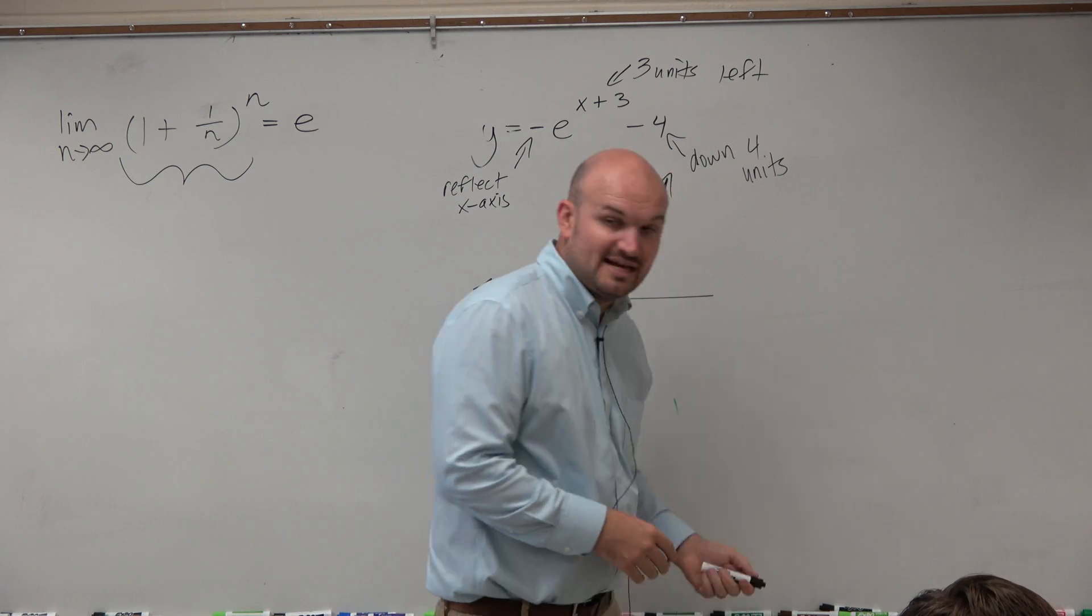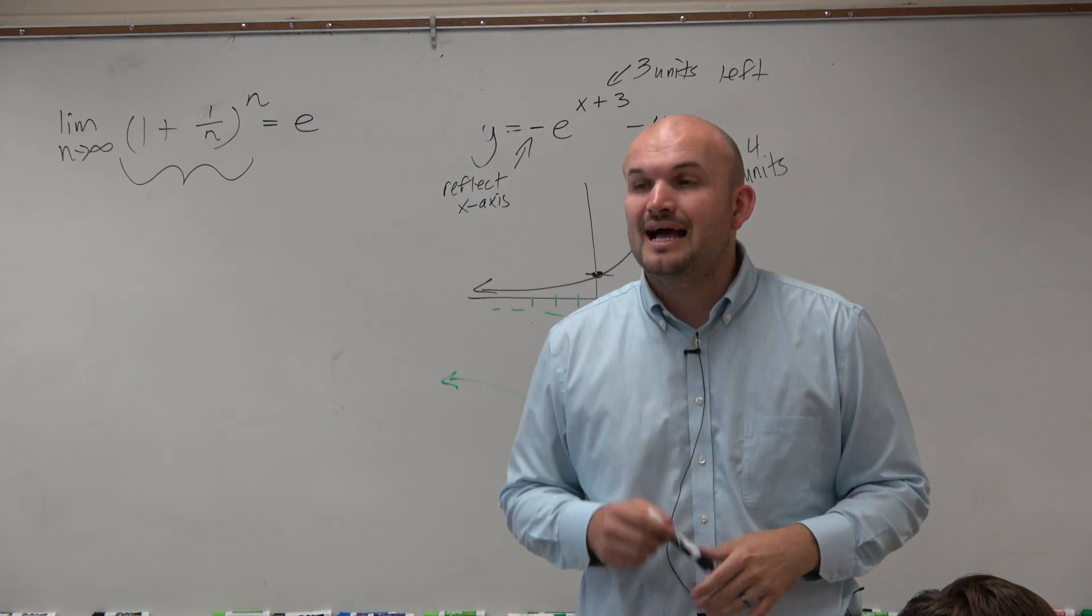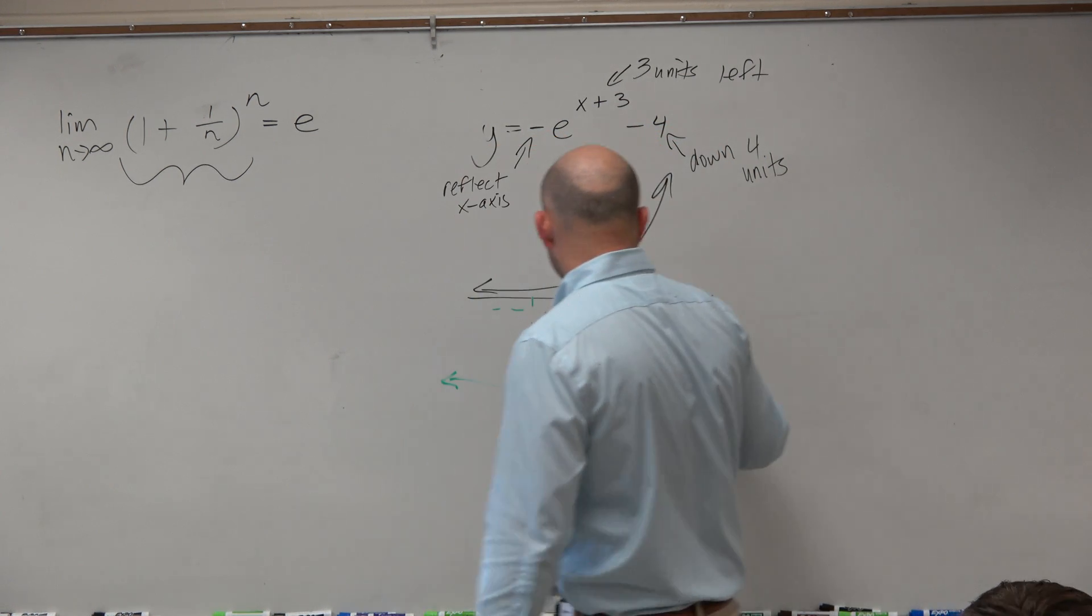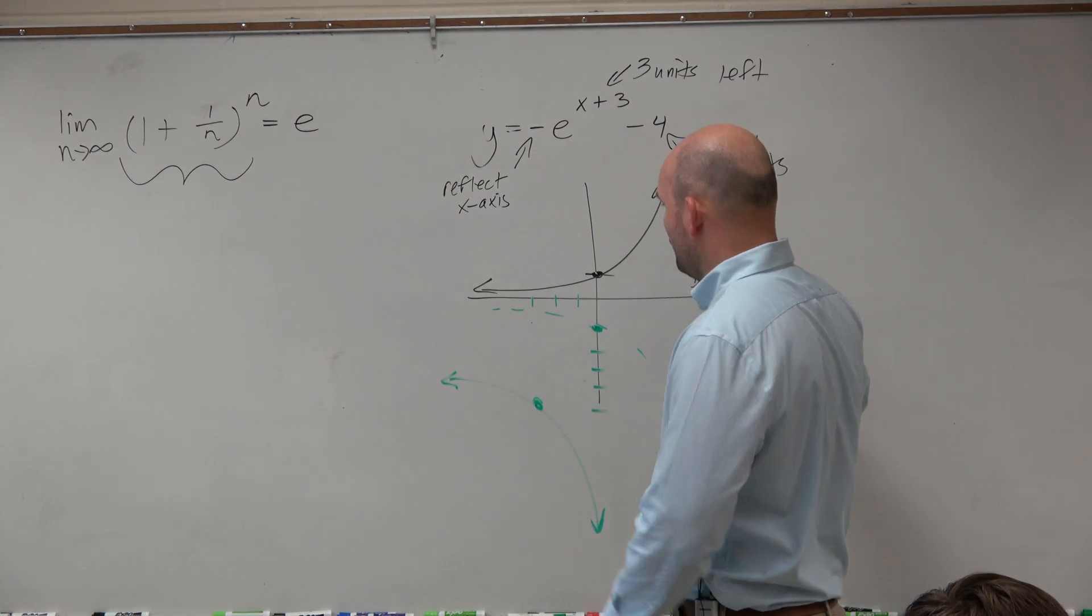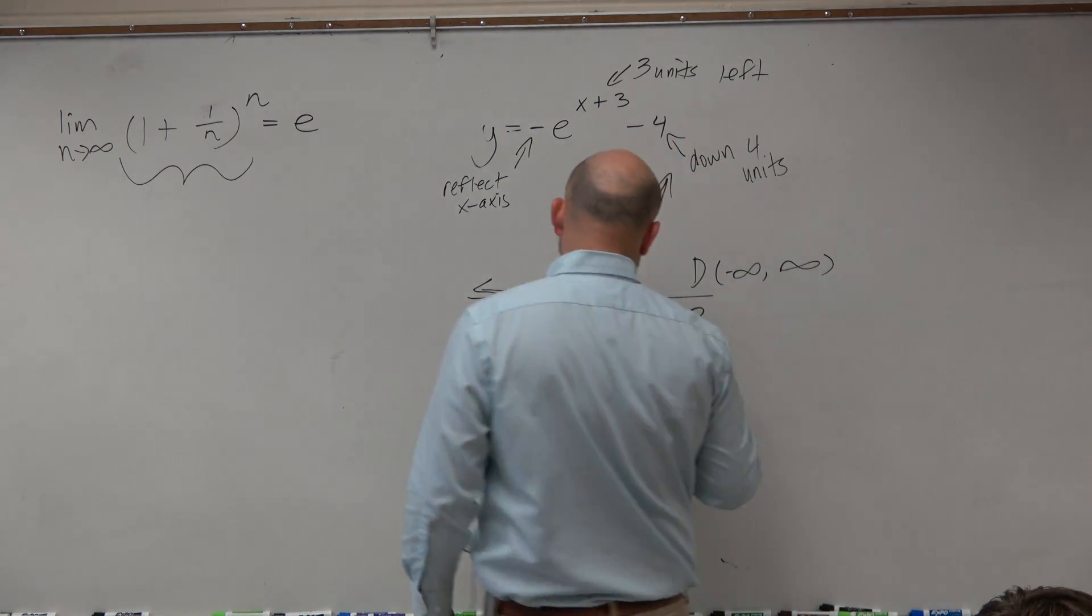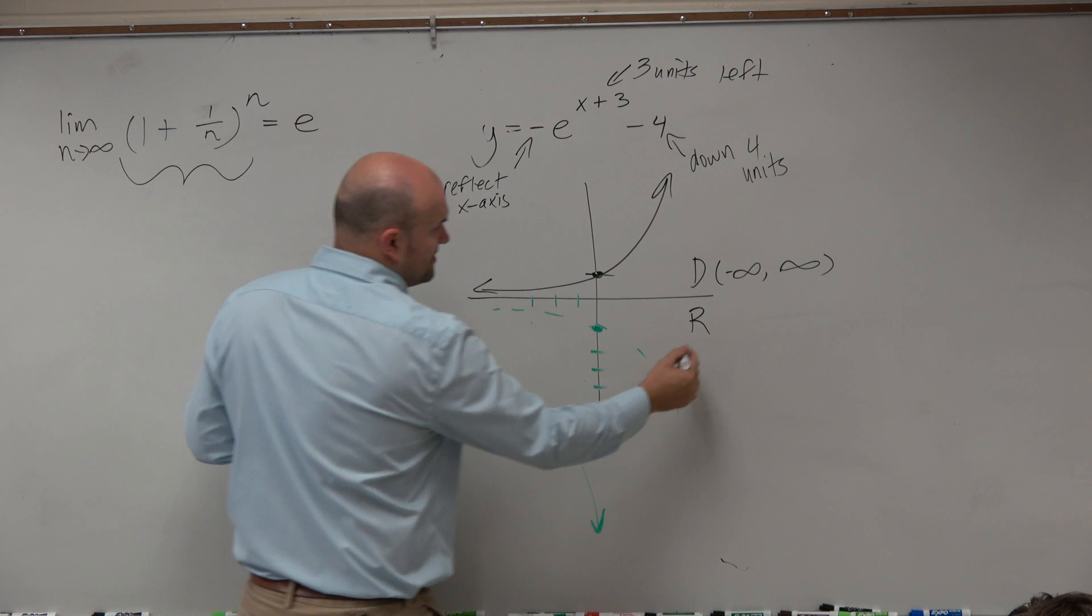All right. Now the next thing is identifying what the asymptotes are, as well as your domain and range. You guys can see that the domain of this graph is still going to be negative infinity to infinity.